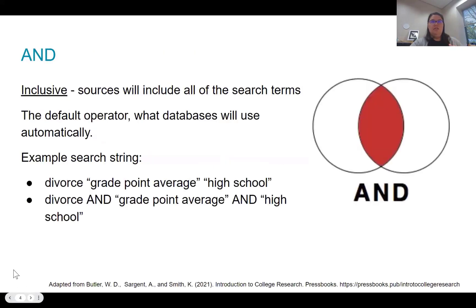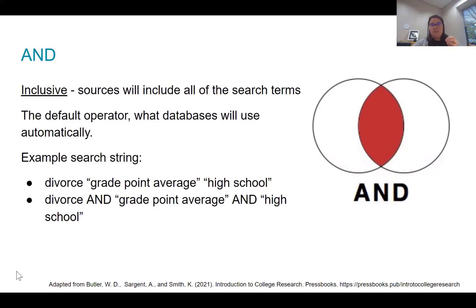AND is an inclusive operator, meaning sources returned with an AND search are going to include all of those search terms. It is also the default operator — if you don't put any operators into your search string, the database will automatically assume AND. So typing 'divorce grade point average high school' is the same as 'divorce AND grade point average AND high school.' It's inclusive — it includes all those search terms in the results.